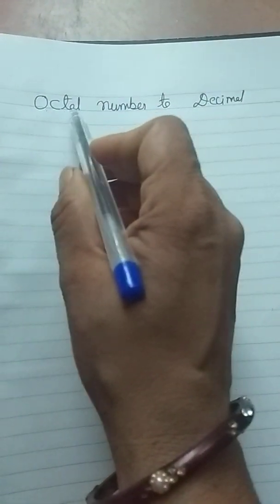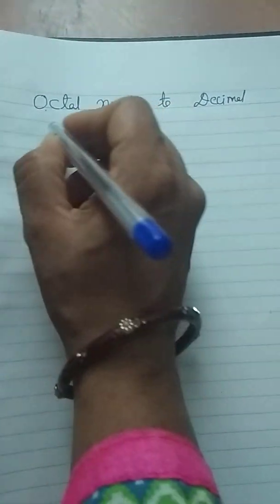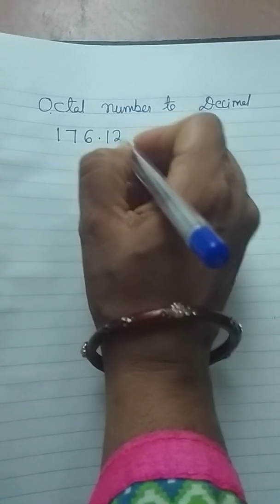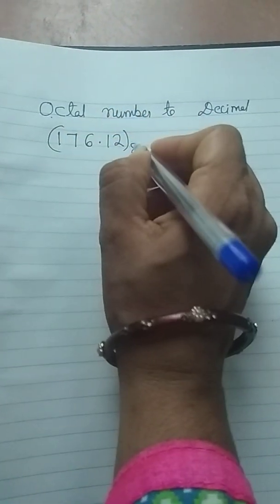If you want to convert an octal number to decimal, suppose the octal number is 176.12 base 8.